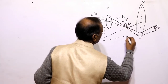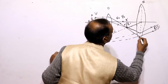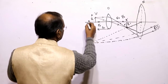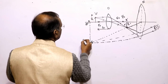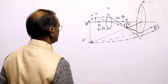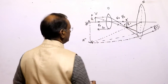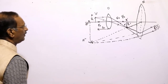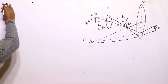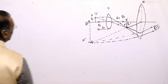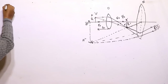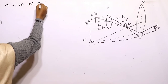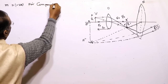The image is formed as A double-dash, B double-dash. The magnification of the compound microscope is always negative, meaning the final image is inverted compared to the object.